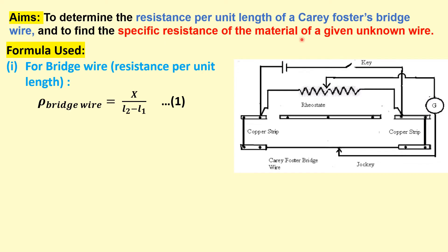The first aim is to measure the resistance per unit length for the bridge wire. Initially, we balance this bridge by keeping P and Q equal, then placing copper strips in the two gaps to complete the circuit. Using the jockey in the middle of the bridge wire, we can find an almost balanced bridge and observe null deflection in the galvanometer.